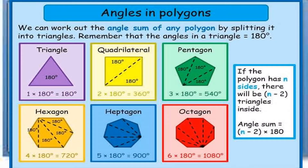We will now explore how to find the sum of the measures of the interior angles of any polygon. We can work it out by splitting it into triangles. The sum of the three angles of a triangle is 180 degrees. For a four-sided polygon, a quadrilateral, two triangles are formed when a diagonal is drawn. So two times 180 degrees equals 360 degrees — the sum of the interior angles of a quadrilateral.